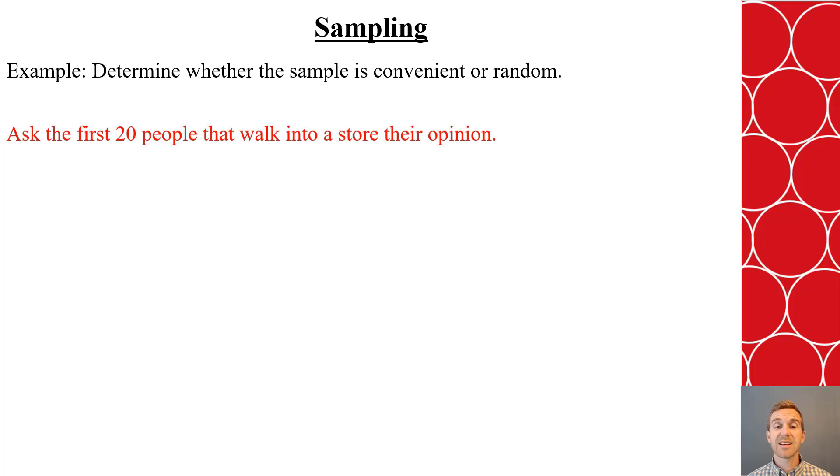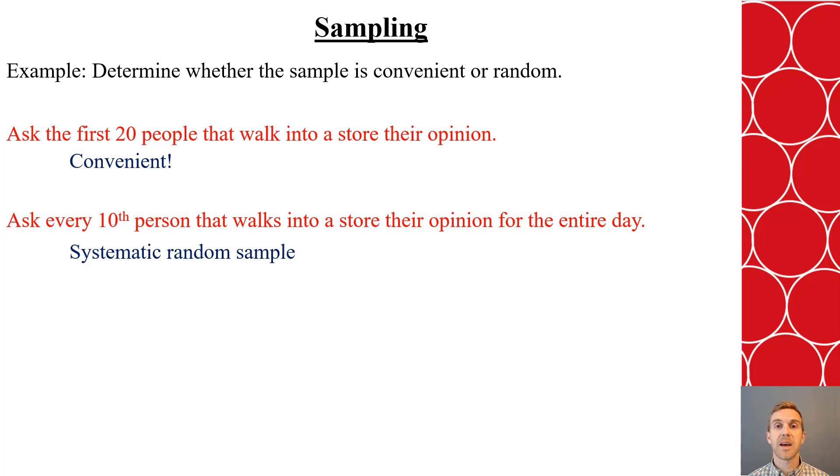Now, let's look at some examples. Say we ask the first 20 people that walk into a store their opinion. This is considered a convenient sample because there's nothing random about that. You're just choosing the very first 20 people you see because that's the easiest people to grab. In contrast, what if we ask every 10th person that walks into the store their opinion for the entire day? That is an example of a systematic random sample because you don't know who the 10th person will be at each time, and it's occurring all day long. So, you're hitting all groups of people that may come during the different parts of the day.